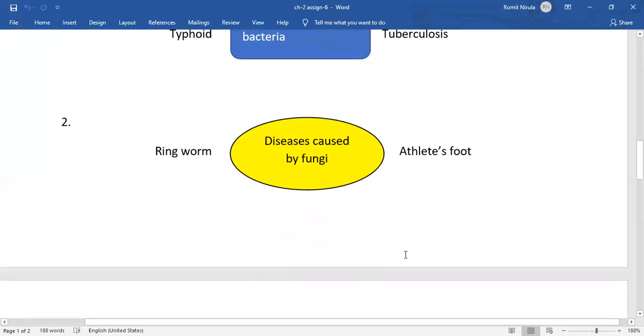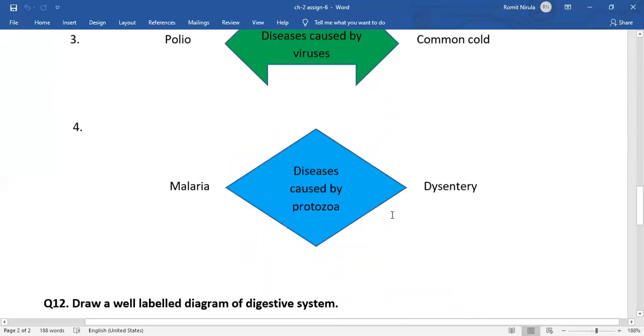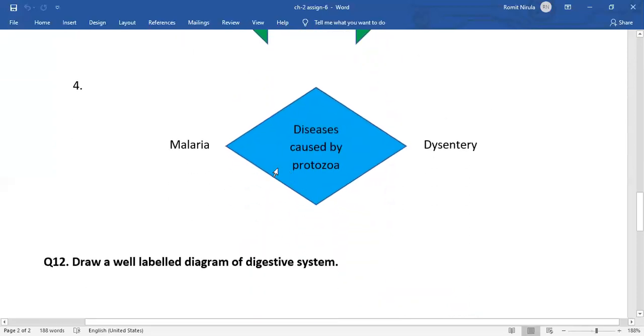Number three, diseases caused by viruses: polio and common cold. Number four, diseases caused by protozoa: malaria and dysentery.